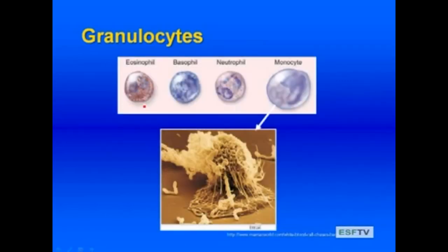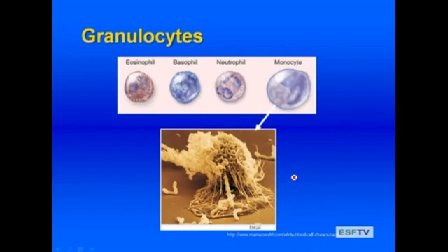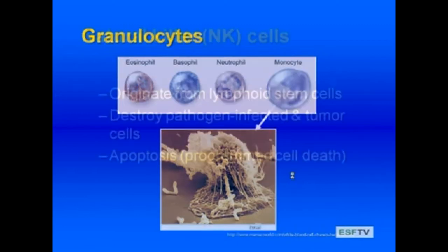Here's what some of these cells look like: an eosinophil associated with parasitic or allergic disease; basophils releasing substances that initiate the inflammatory response; and neutrophils and monocytes both undergoing phagocytosis. There is a video available via a URL in the slides showing a white blood cell chasing a bacterium and then engulfing it — a really nice visual example of how this happens.